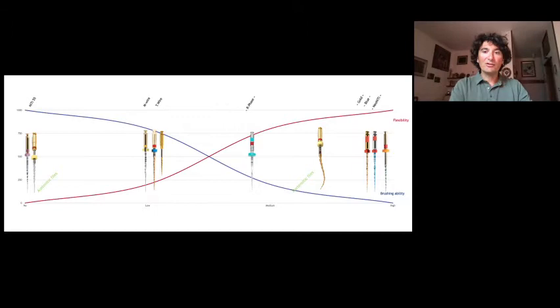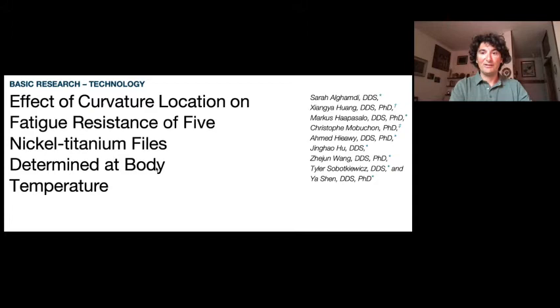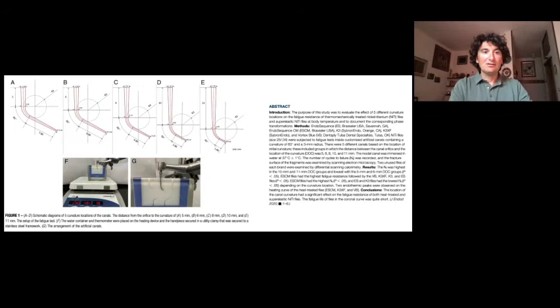We can use any kind of file — heat-treated or not. Of course, if we want to preserve more anatomy, we can try to use modern heat-treated files, which can give us longer cyclic fatigue resistance and help us avoid fracture. Following the literature, we can get answers in terms of curvature location, and understanding curvature location helps us understand how to avoid file breakage. Curvature location is so important for every file, even if heat-treated, stiff or not, or with a different cross-section.